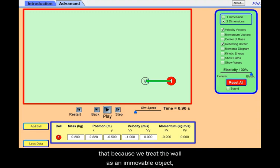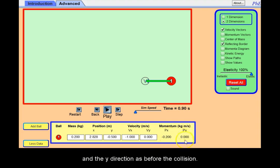Notice that because we treat the wall as an immovable object and the collision is 100% elastic, the rebound of the object had an equal magnitude momentum in the x and the y direction as before the collision.